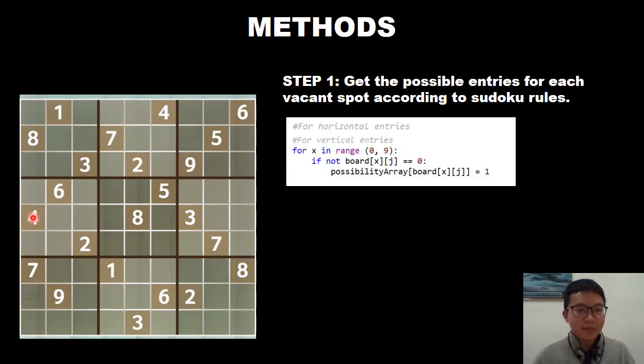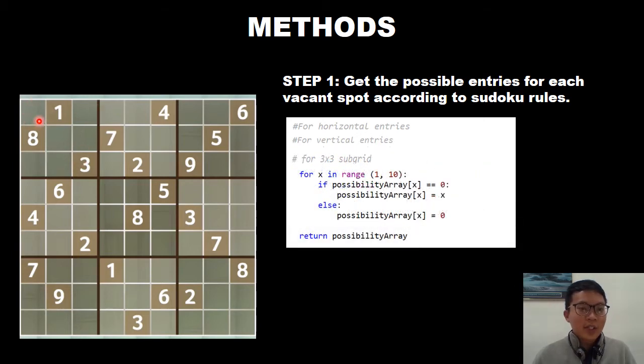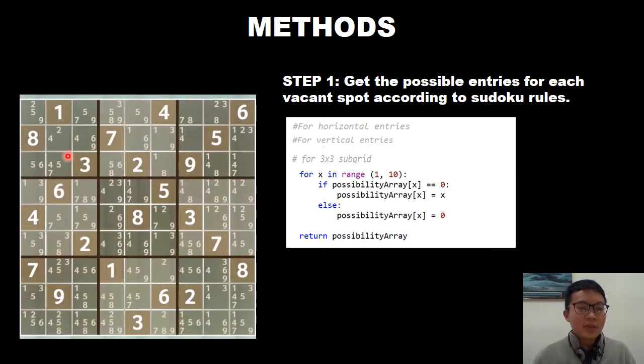Same for the vertical entries and 3x3 subgrid. For this vacant spot, those values which are not stored in the array are actually the possible entries for this vacant spot. Then we will look for the other vacant spots. Tada! So these are all the possible entries for the spots.